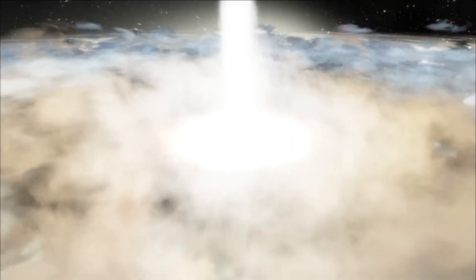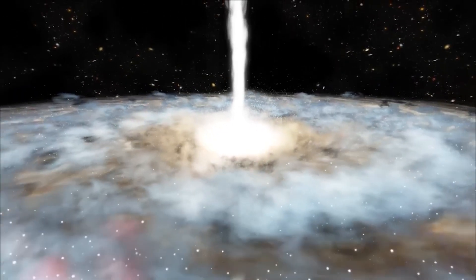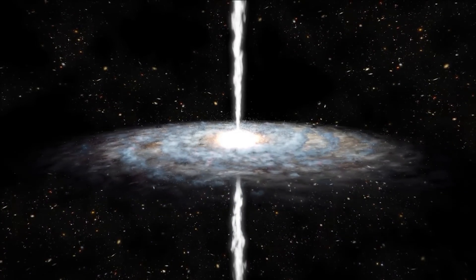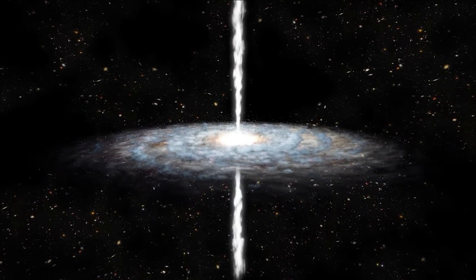Some scientists have proposed the idea of a wormhole connecting a black hole and a white hole, suggesting that they could be different manifestations of a unified phenomenon. According to this idea, matter falling into a black hole could emerge from a white hole in a different region of space-time or even another universe.